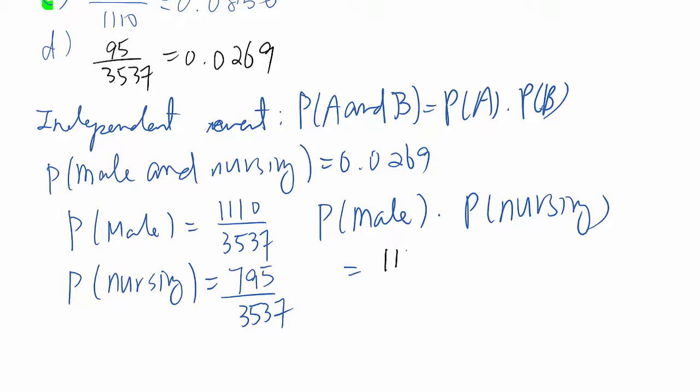1110 over 3537 times 795 over 3537 equals...